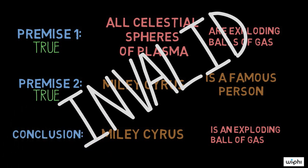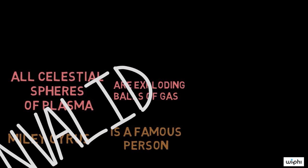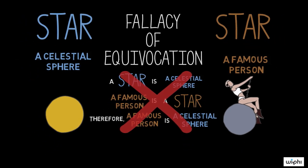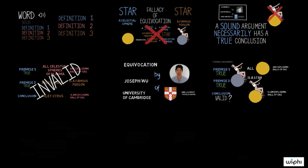This example is surely far-fetched. After all, no one has ever equivocated Miley being a famous person with Miley being an exploding ball of gas. But now that we understand how this fallacy generally works, let's look at two examples that are not so easy to spot.